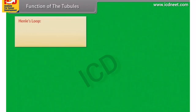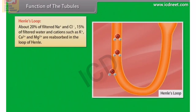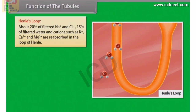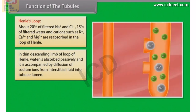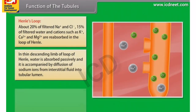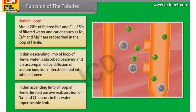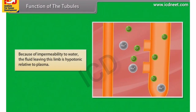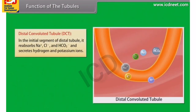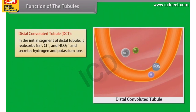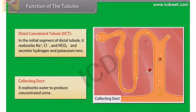In Henle's loop, about 20% of filtered Na⁺ and Cl⁻, 15% of filtered water, and cations such as K⁺, Ca²⁺ and Mg²⁺ are reabsorbed. In the thin descending limb, water is absorbed passively, accompanied by diffusion of sodium ions from interstitial fluid into the tubular lumen. In the thin ascending limb, limited passive reabsorption of Na⁺ and Cl⁻ occurs; because of impermeability to water, the fluid leaving this limb is hypotonic relative to plasma. In the distal convoluted tubule (DCT), Na⁺, Cl⁻ and HCO₃⁻ are reabsorbed, and hydrogen and potassium ions are secreted. The collecting duct reabsorbs water to produce concentrated urine.